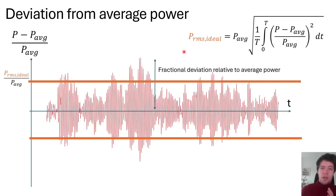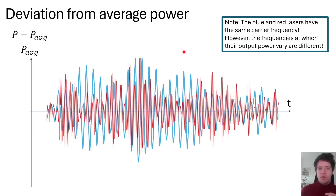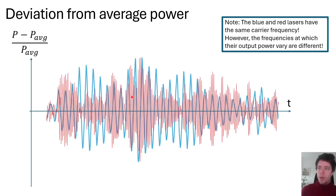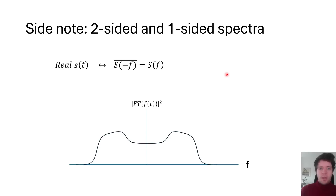This is a good start, but it's still incomplete because two different lasers can have the same RMS variation while that variation occurs at very different frequencies. For example, the blue trace oscillates much more slowly than the red trace, even though both have about the same deviation from the average. The question is: how do we quantify which noise frequencies contribute the most to variation in the output power?